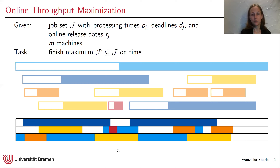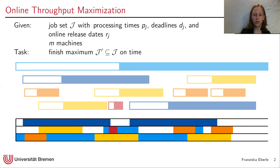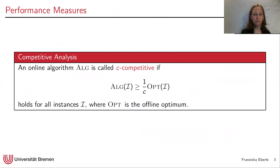In this particular example, the solution actually finishes all jobs — that is best possible in this case and also achievable here. In general, incomplete information prevents the scheduler from making optimal decisions. So how do we measure the quality of an online algorithm? We use competitive analysis: an algorithm is C-competitive if the throughput it achieves is at least a 1/C fraction of the optimal throughput, where the optimal is measured for the offline optimum that knows all jobs and their parameters in advance.